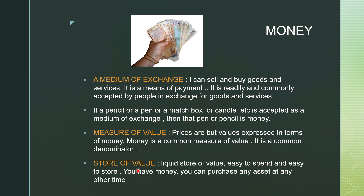Money is also a store of value — it is a liquid store of value. It is very easy to spend: if you have 1 lakh rupees, just go to a mall and spend it. It is easily acceptable and easy to store. If you have money, you can purchase any asset at any time. These are the basic characteristics of money which currency notes possess.